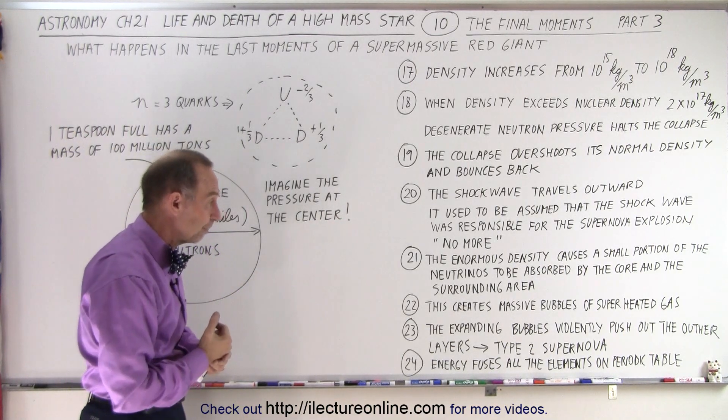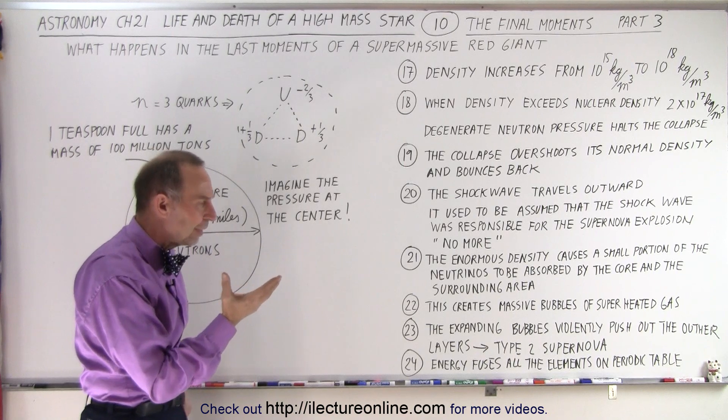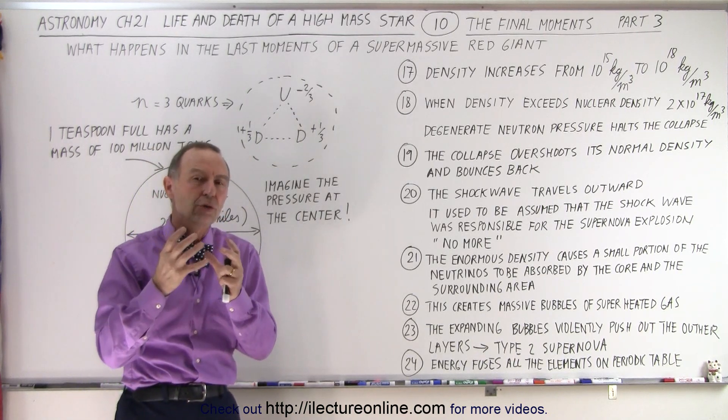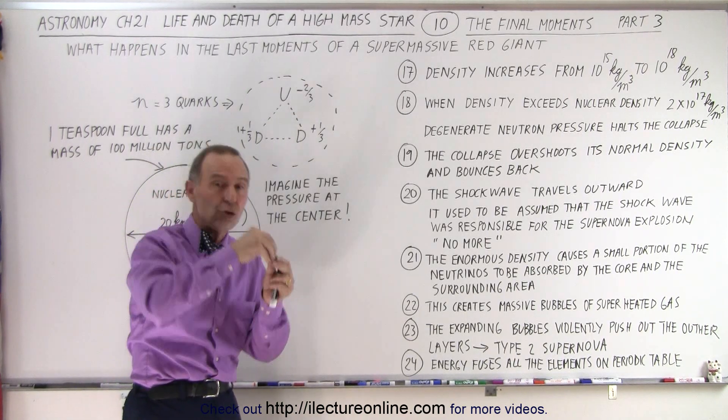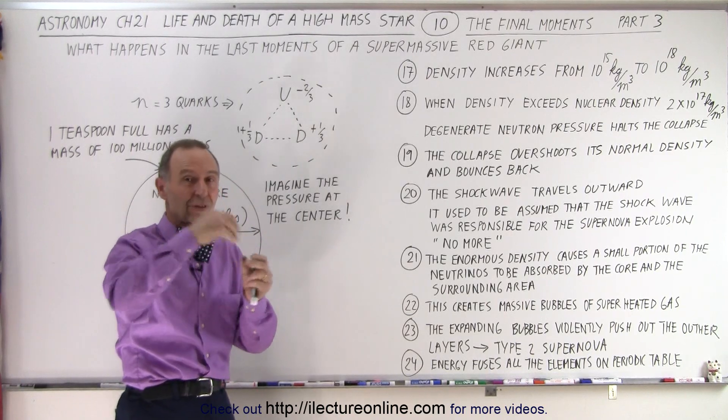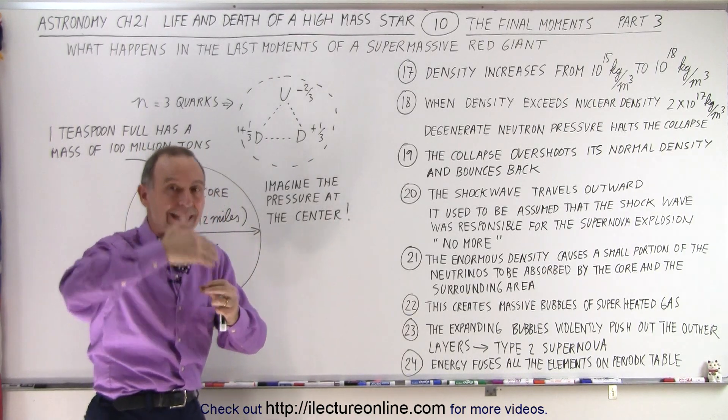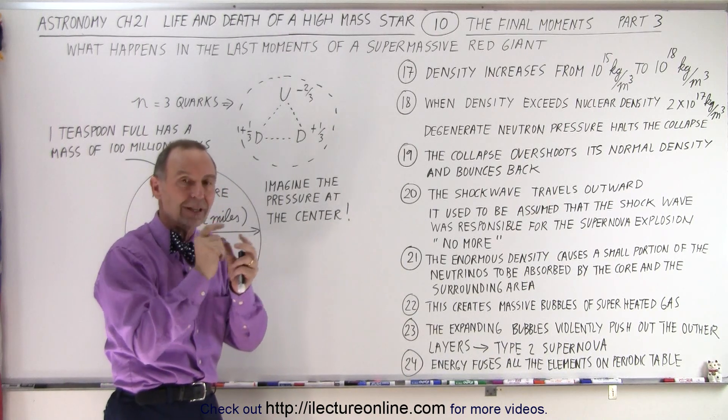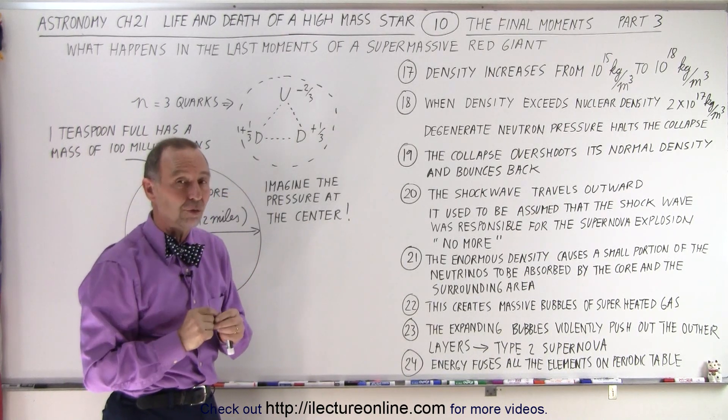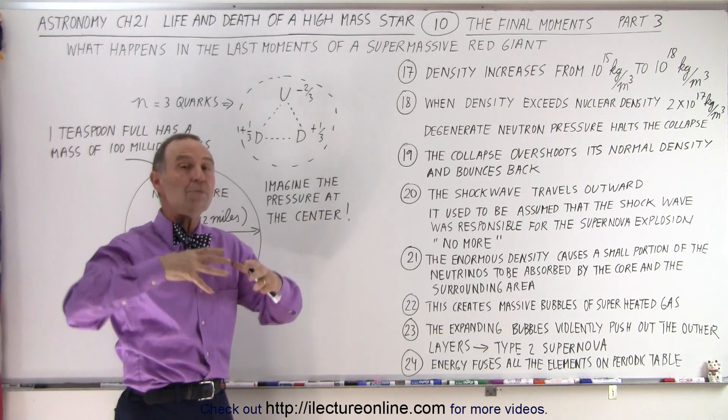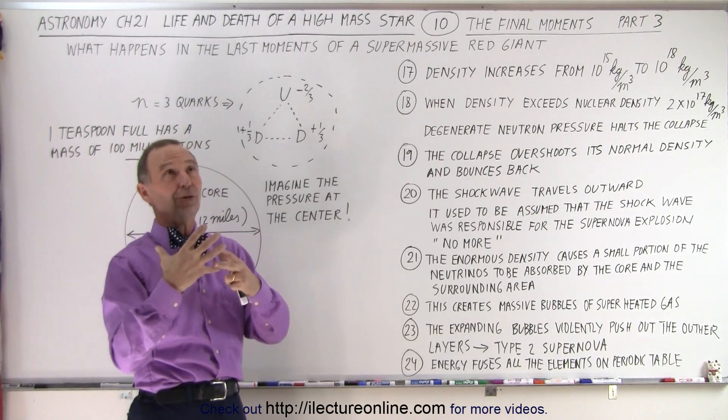So what is it that causes that type 2 supernova in which such enormous energy is deposited where all the elements of the periodic table are formed, all the way up to plutonium, uranium, and so forth? It turns out that it was the neutrinos that were created when the protons and electrons were pushed together into neutrons. In each case for every conversion like that, producing one single neutrino.